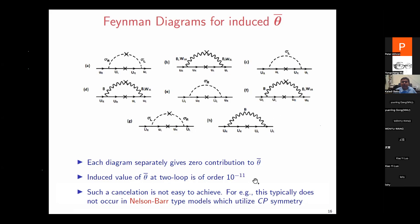This cancellation of theta-bar at one loop is not shared by another class of models called the Nelson-Barr models, which use a similar idea but with spontaneously broken CP symmetry instead of parity. In the Nelson-Barr case, theta-bar is typically induced at one-loop level, and achieving theta-bar < 10^{-10} requires tuning. In the parity model presented here, all one-loop diagrams give zero contribution — this is the power of parity symmetry. The parity breaking mass difference between W_L and W_R originates from a parity-invariant theory with spontaneous breaking.